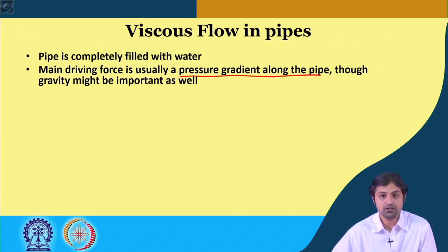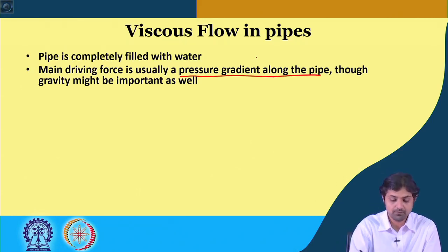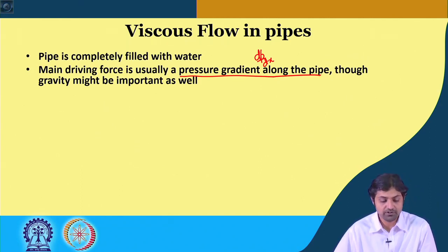If you remember from dimensional analysis, we derived an equation for the pressure drop per unit length in the pipe. You would imagine that the pressure gradient along this pipe, delta p by delta x — let us say x is the flow direction — is very important. Here gravity may or may not be important, but to define pipe flow, we said a pressure gradient must be present.